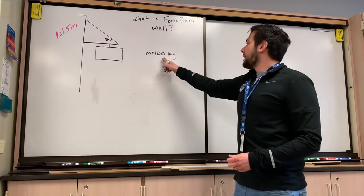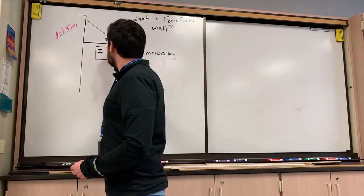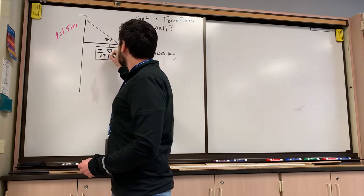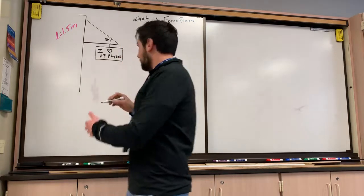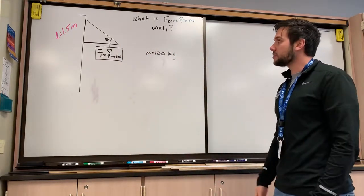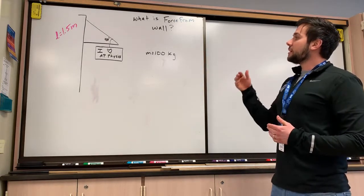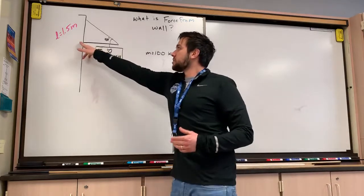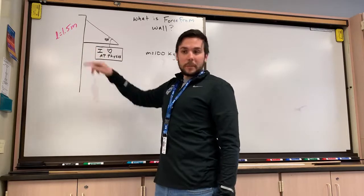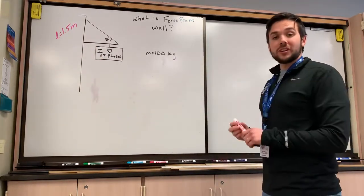And we've got a mass of a sign that's 100 kilograms. Maybe that sign says I heart AP physics, a very common sign you see around. What we need to do is figure out exactly how much force this wall is going to exert on the bar that's holding this sign up. So what we need to do first is identify what forces are at play here. What forces are acting on this bar?